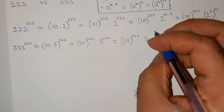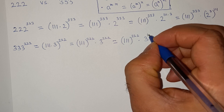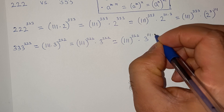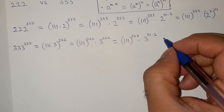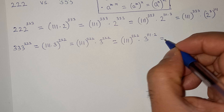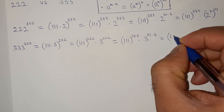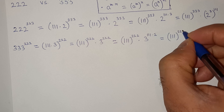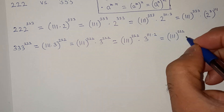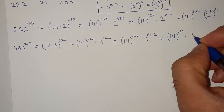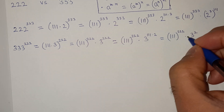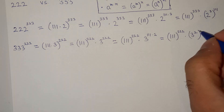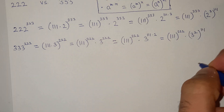3 power triple 1 multiplied 3 square power triple 1.